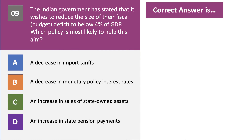Question nine: the Indian government has stated it wishes to cut the size of their fiscal deficit to below four percent of GDP. Which policy is most likely to help this aim? The right answer is C — an increase in sales of state-owned assets. Privatization cuts fiscal deficits because selling state assets, such as a state-owned railway or company, adds to government revenues and cuts the deficit. Lower import tariffs reduce tariff revenue, a change in monetary policy interest rates is not fiscal policy, and an increase in state pension payments would increase government spending.